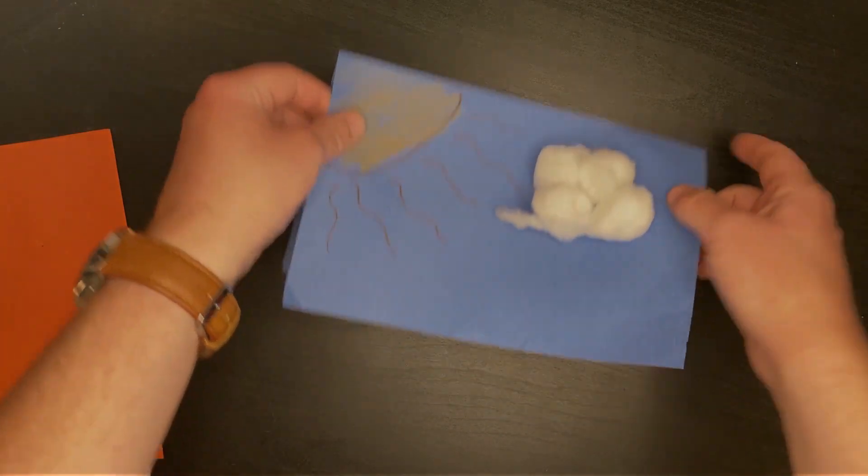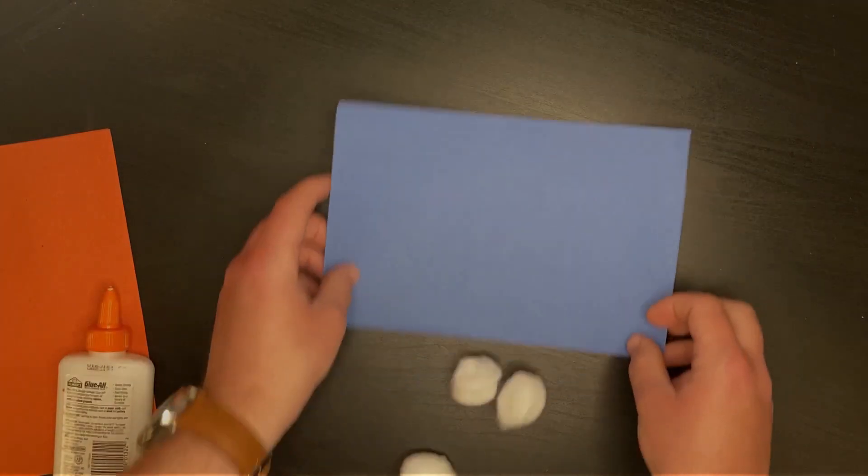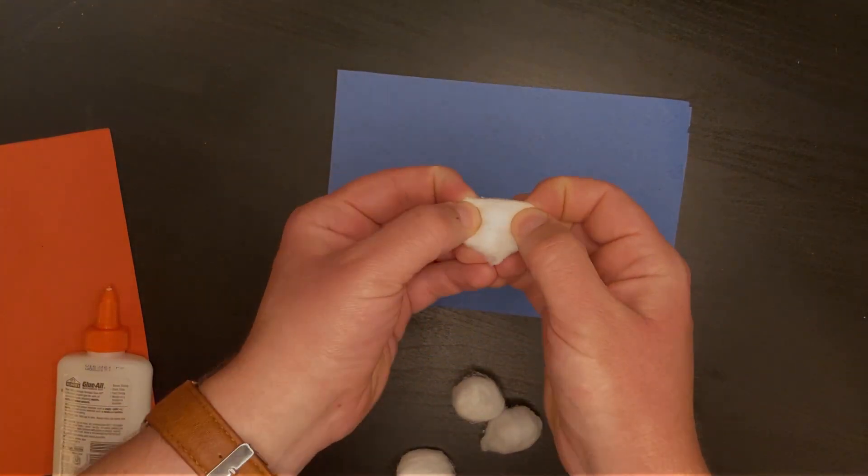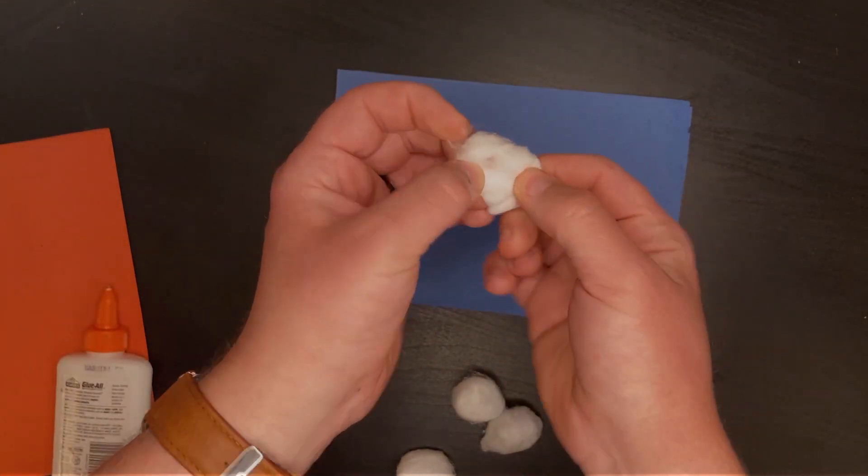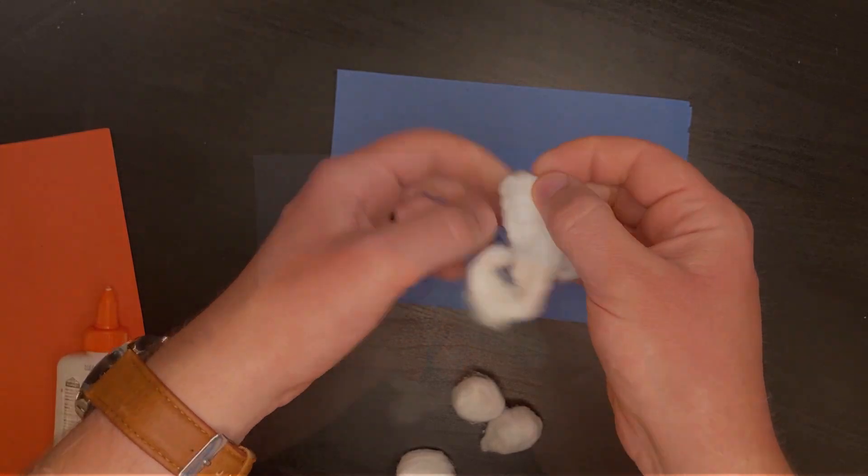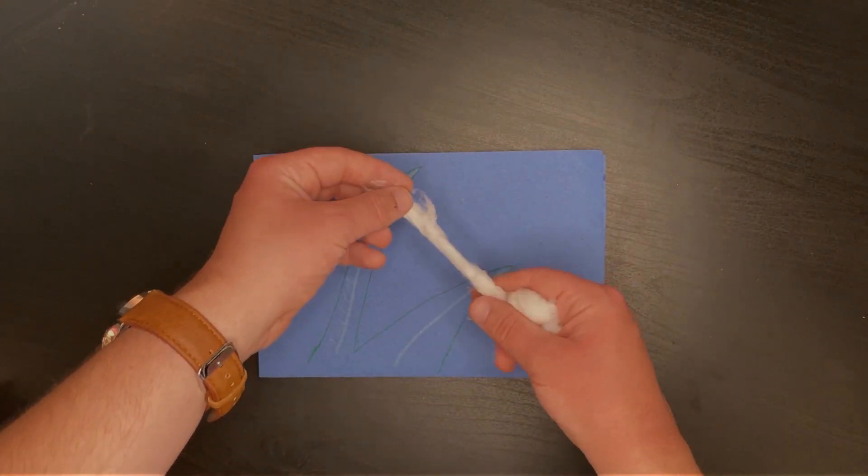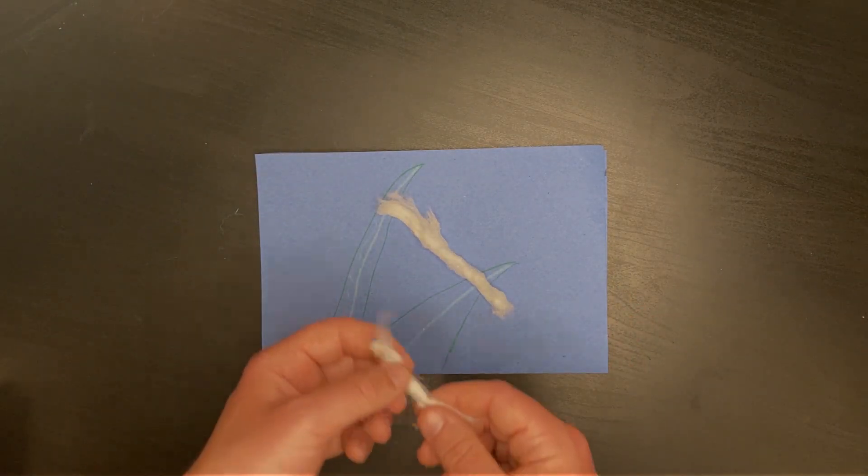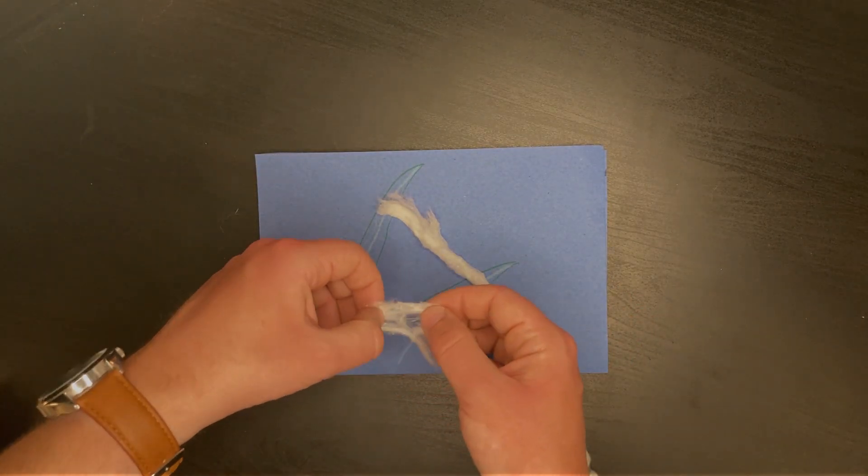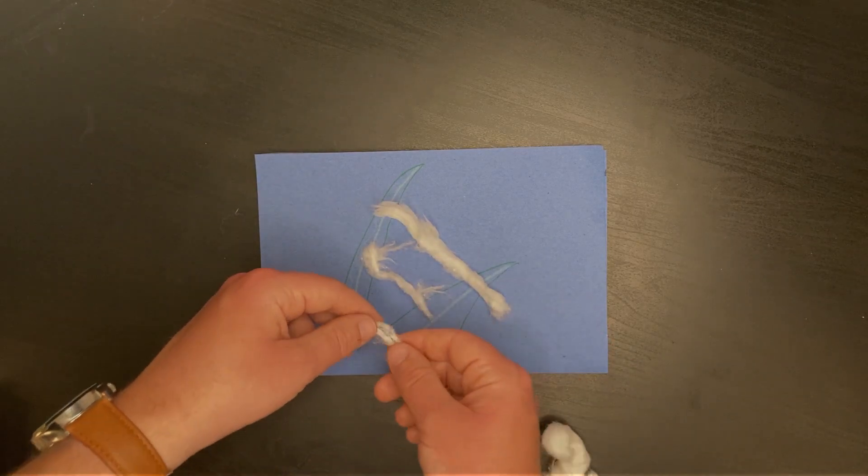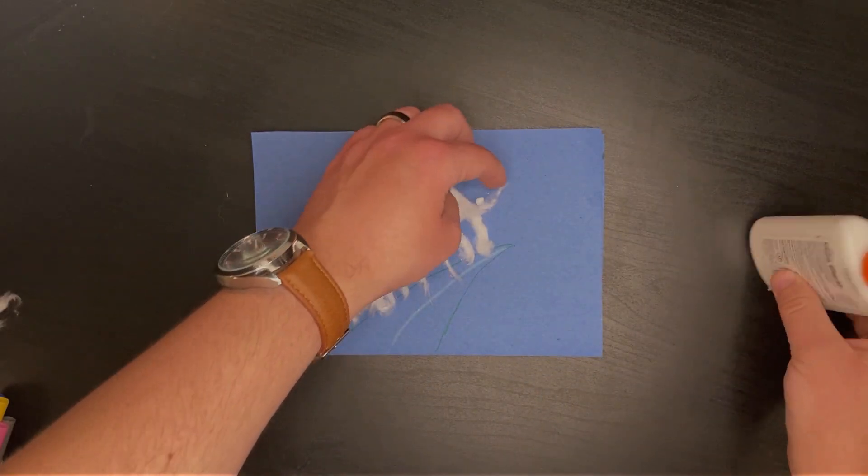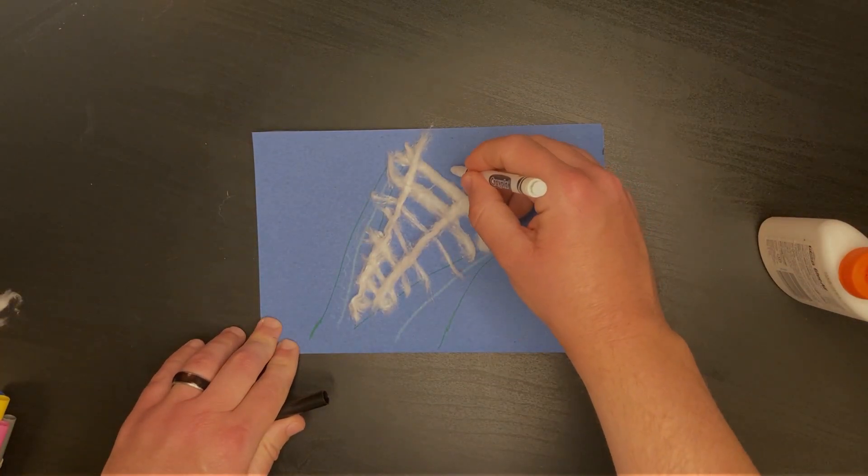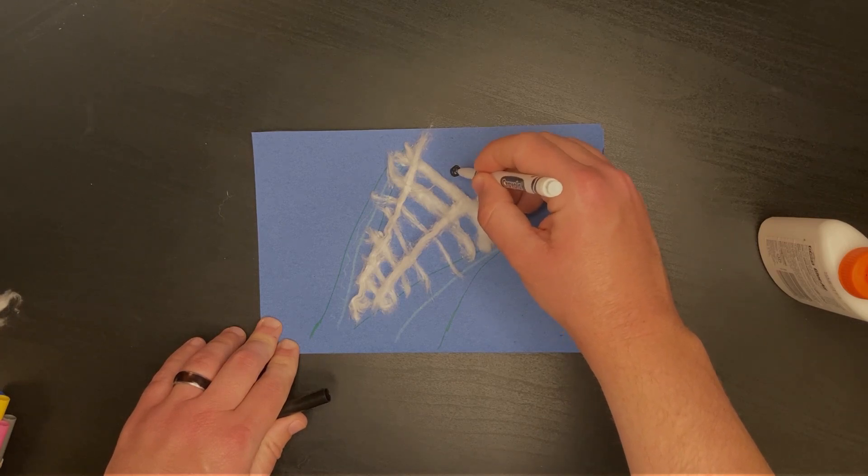But we don't have to limit ourselves to only clouds. There is so much more going on with the materials we have. You can pull apart the ball and create thin spiderwebs or wispy blades of grass or snowflakes or blossoms. Simply glue small portions or chunks of your cotton and then draw around it and see how else your artwork can turn out.